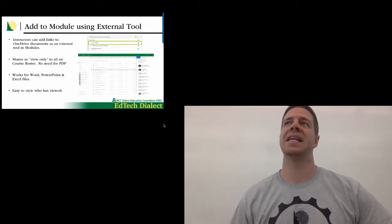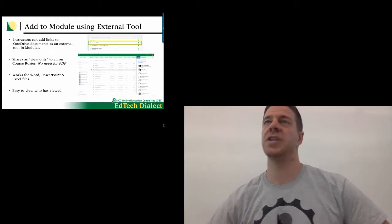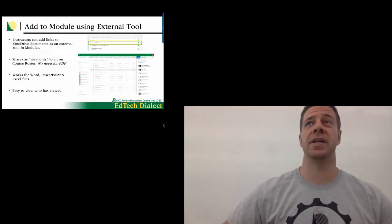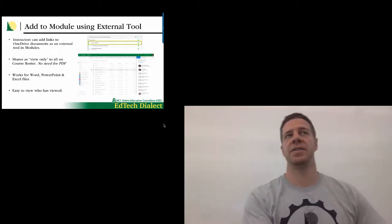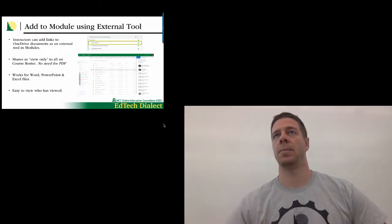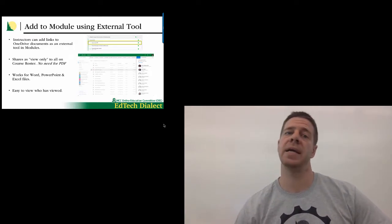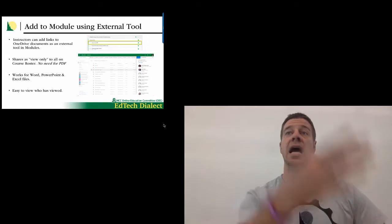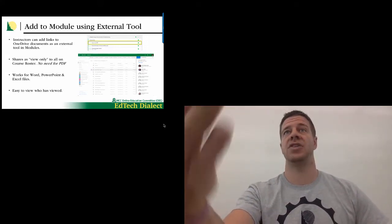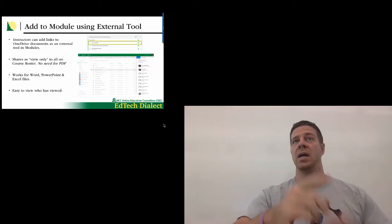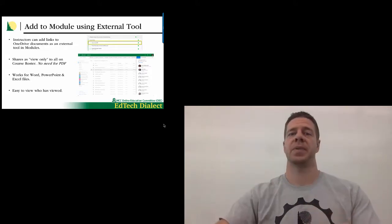That's the true beauty of this — before, when you uploaded a file and saw a mistake, you had to delete the file, go into Word, change the file, save it, upload it, and post it again. Now, when you see a change you need to make, you just go to where it's located. As the instructor, you can go to it in Canvas, make the change, and it's done. That's it — for your presentations, your spreadsheets.